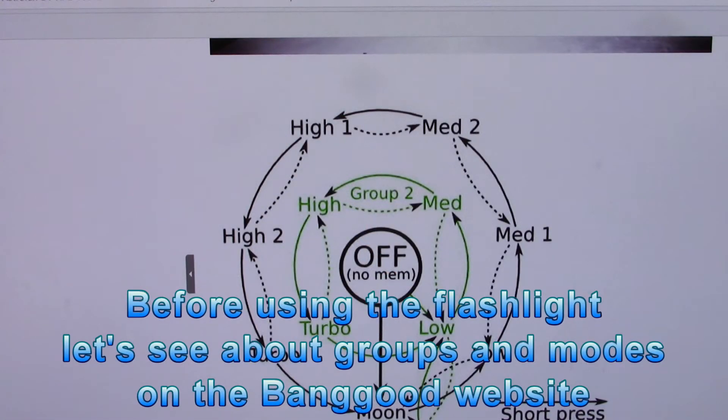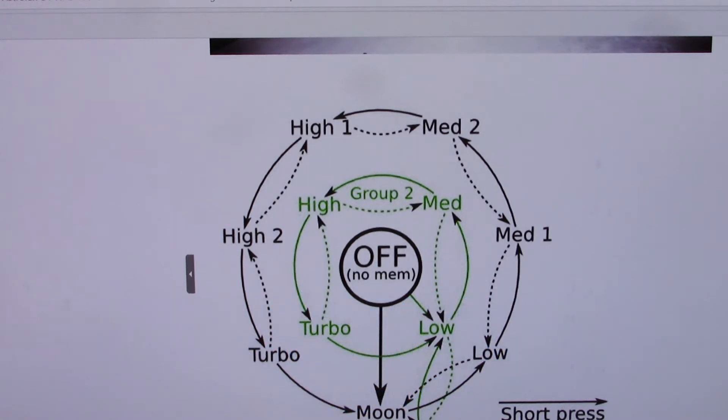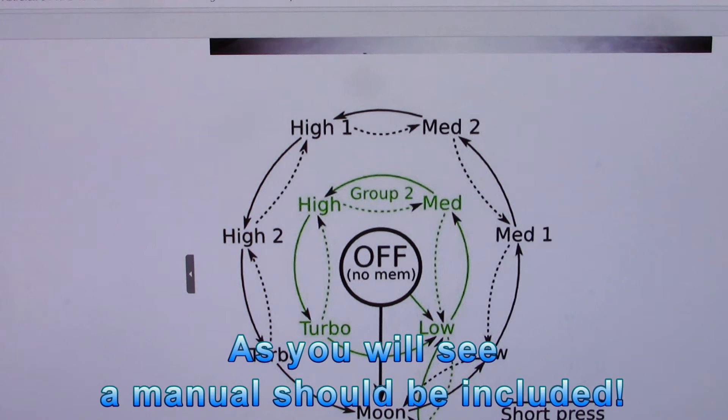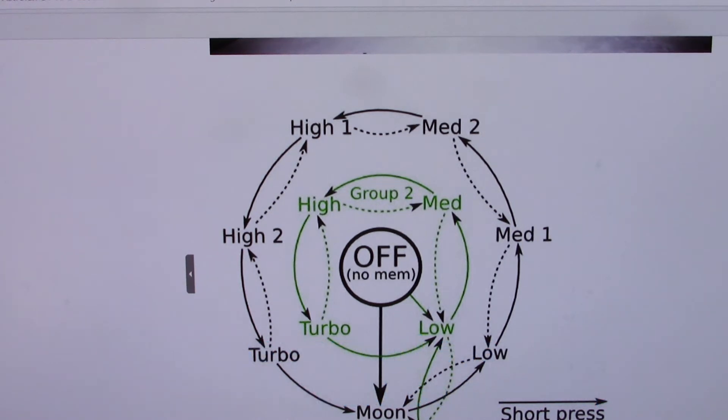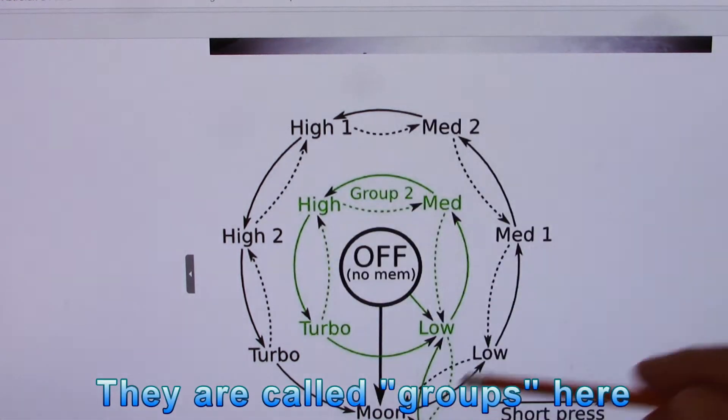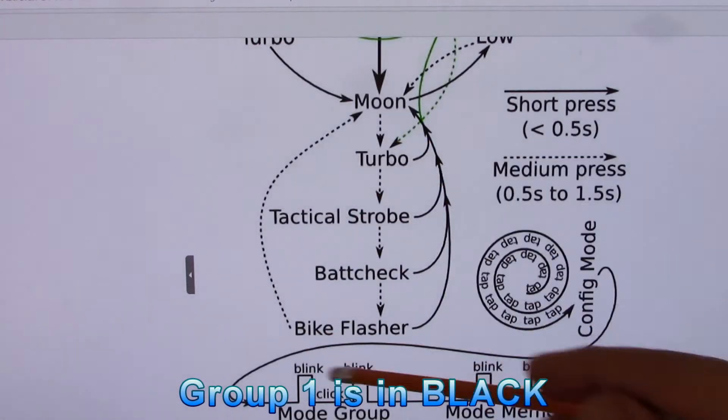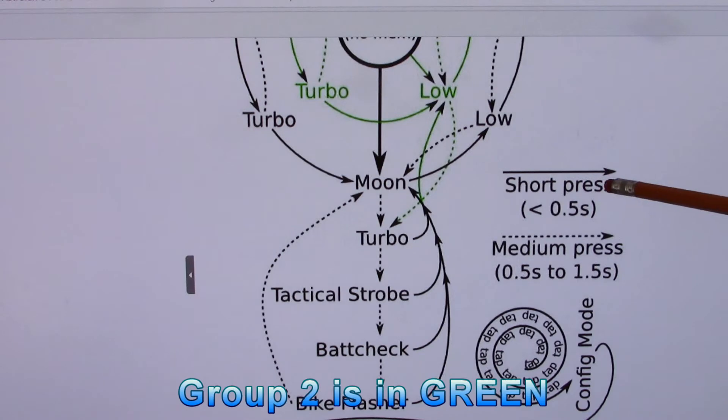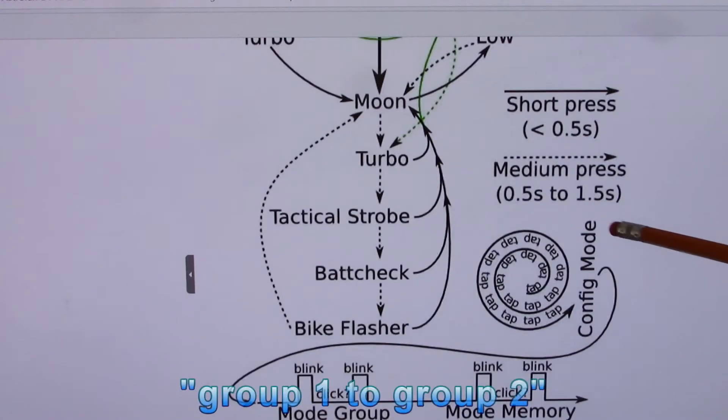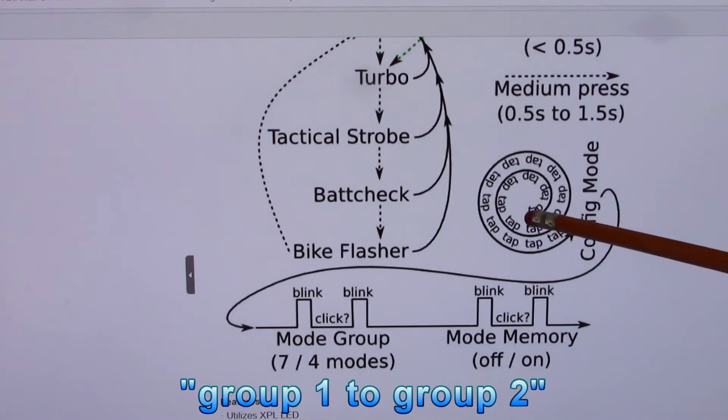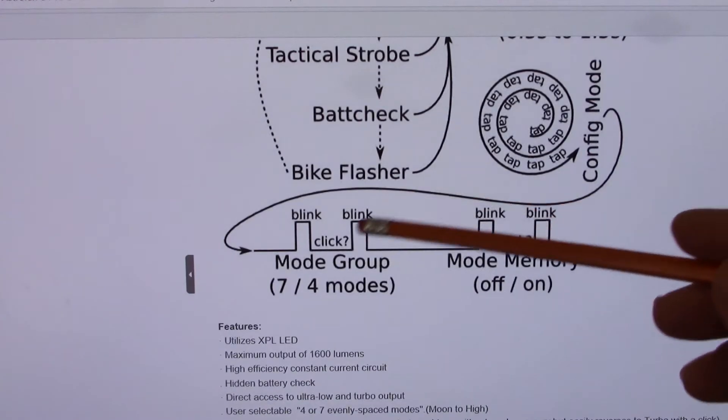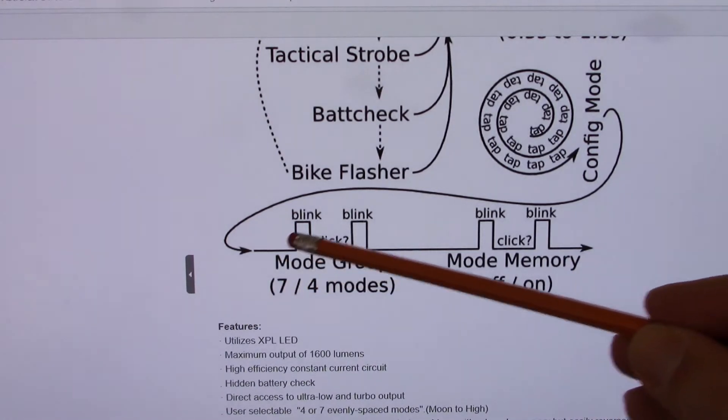This flashlight has several modes of operation. Unfortunately, there is no manual that comes with it. So you have to go to the website to look at how to operate the flashlight. So there are basically two modes of operation. The first mode is shown in black. So you have either this loop here or this one here at the bottom, depending on whether you do a short press on the flashlight or a medium press. And if you want to go from mode 1 to mode 2, you have to do several taps here.